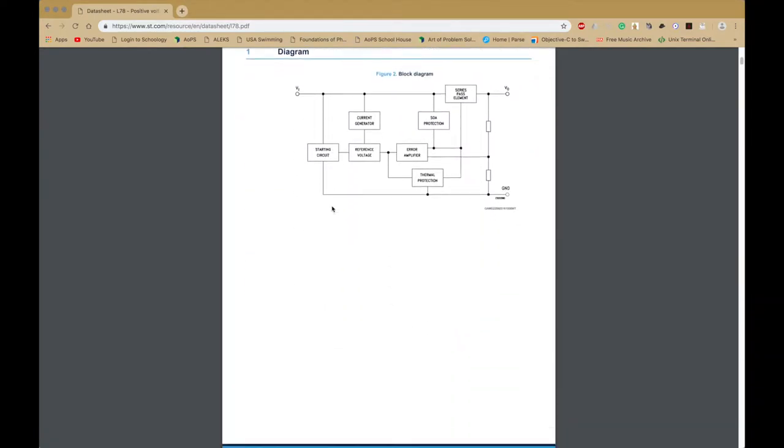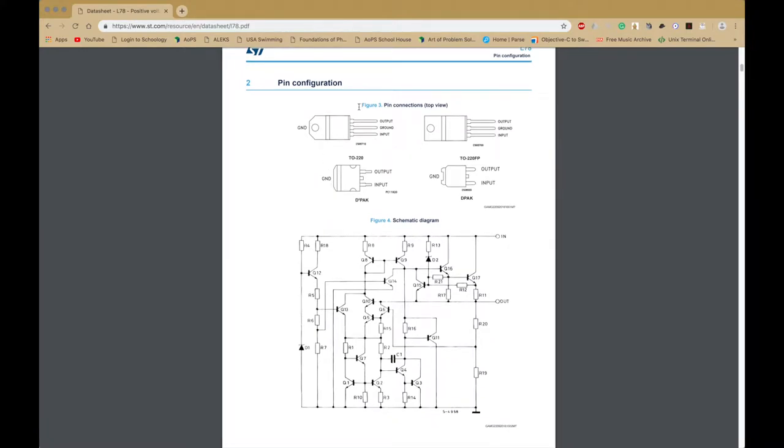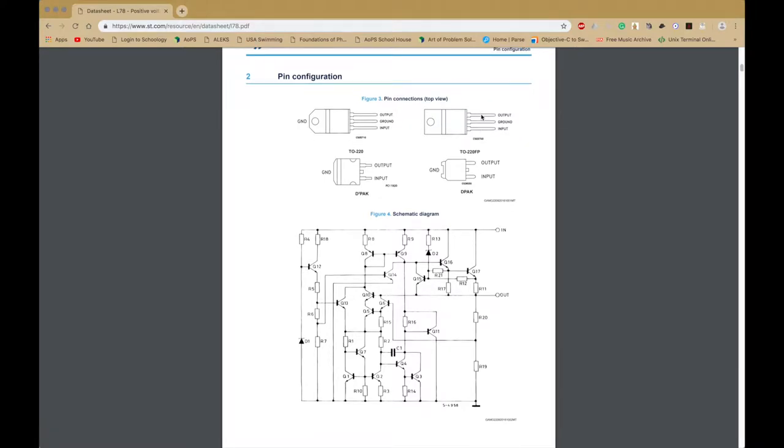Let's go all the way down here. As you can see, we have output, ground, and input. That's how simple it is. Output is going to be about 5 volts if you put in the correct amount in the input, which we will be putting in 9 volts. And we'll connect the ground to our ground.